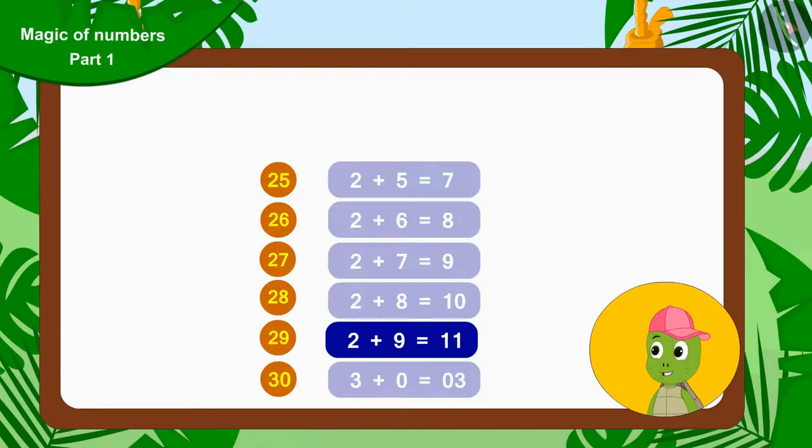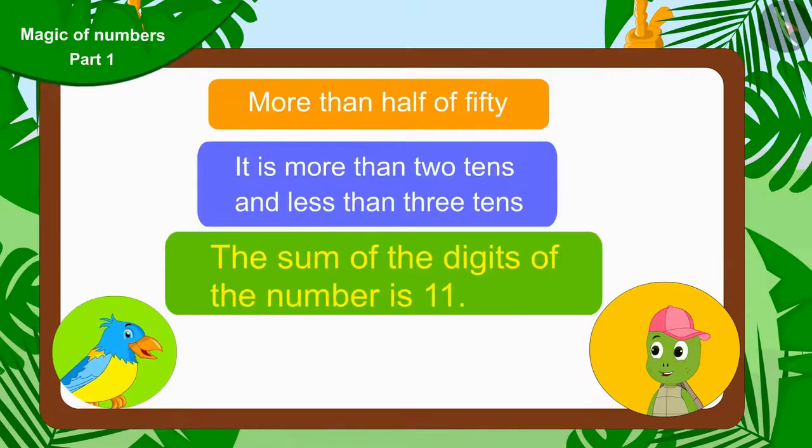'Well, out of these only 29 is the number whose sum is eleven. This means that the number you thought about is 29.' Tufan excitedly told the bird.